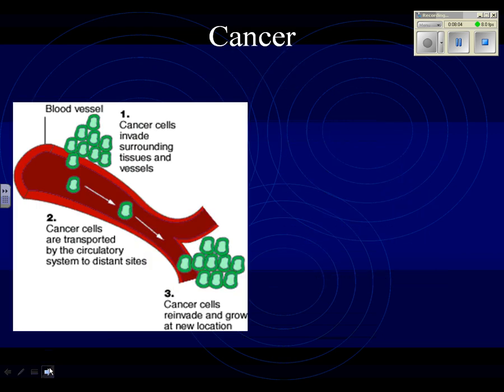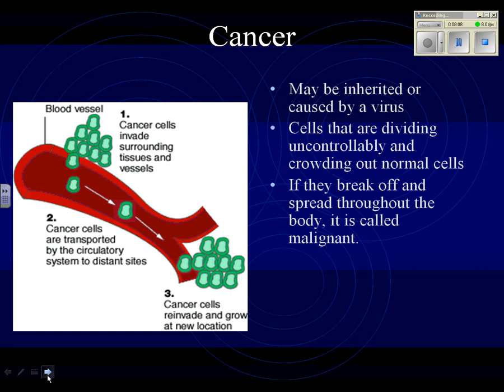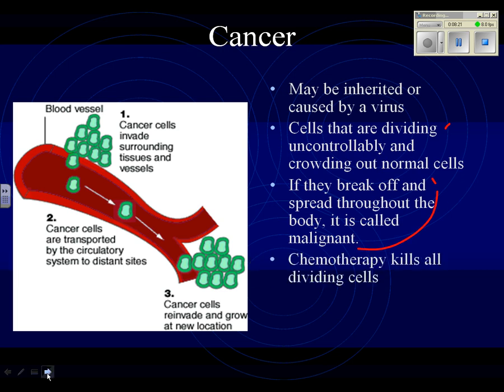Cancer — we've talked about this before, just a brief review. Cancer can be inherited, caused by a virus, or sometimes we don't really know why it starts. Cells are dividing uncontrollably and crowd out normal cells. If they break off and spread throughout the body, it's a malignant cancer. Chemotherapy kills the dividing cells.